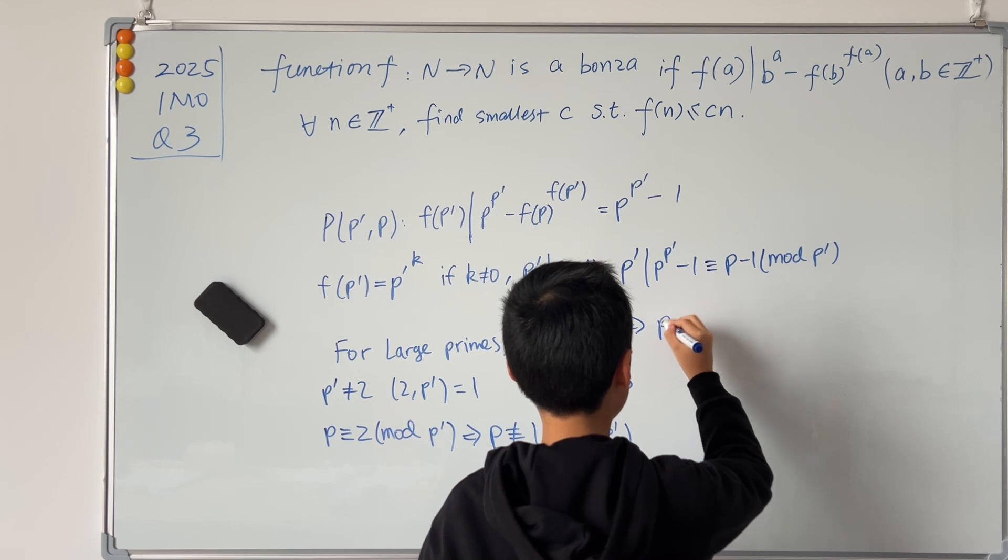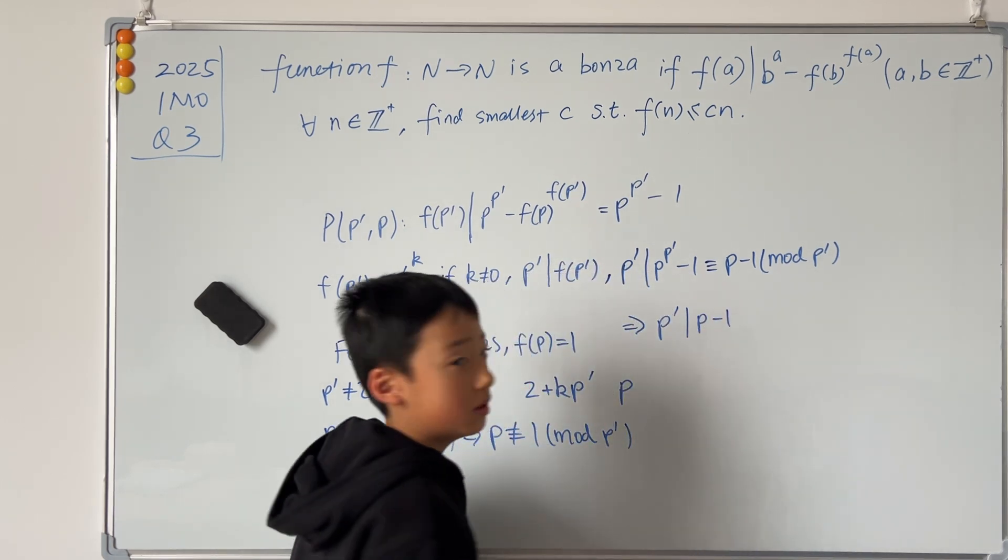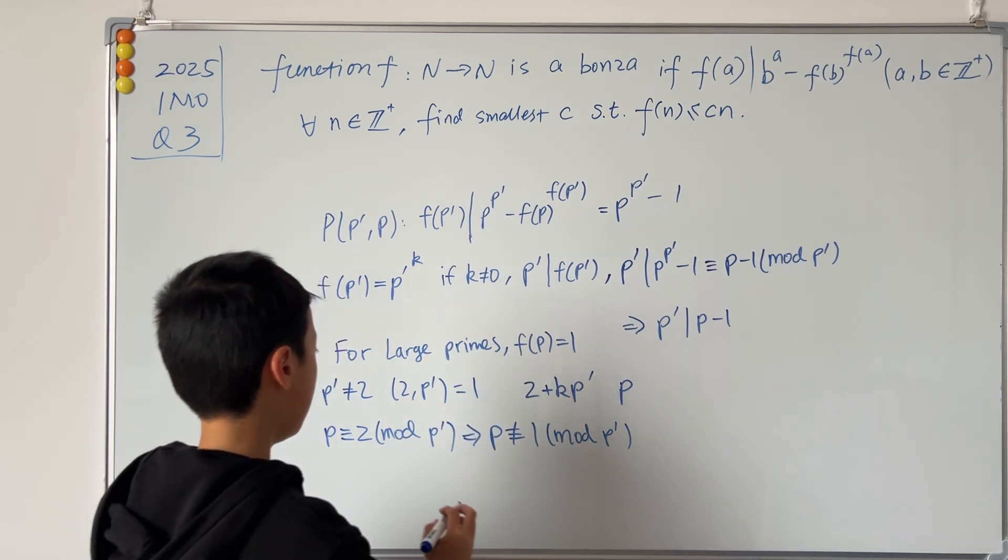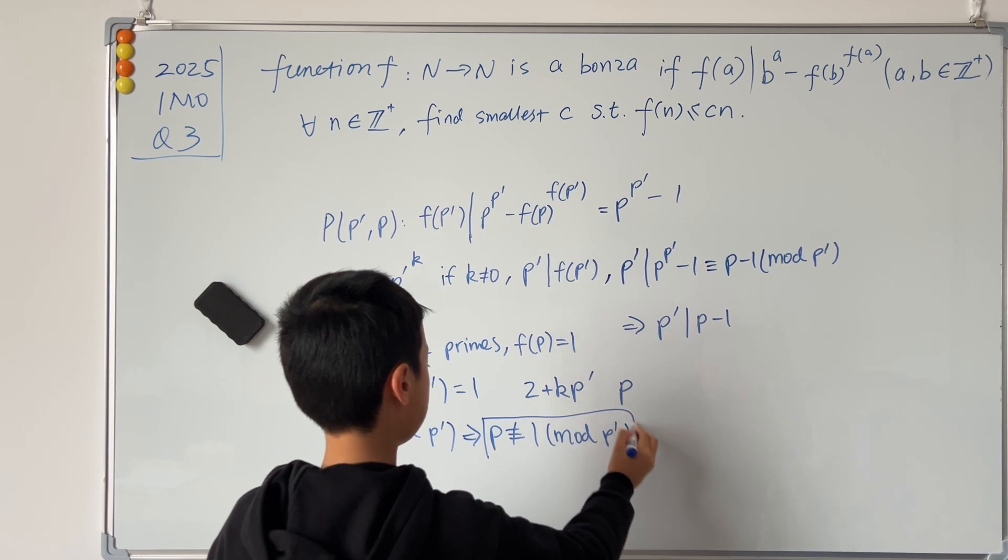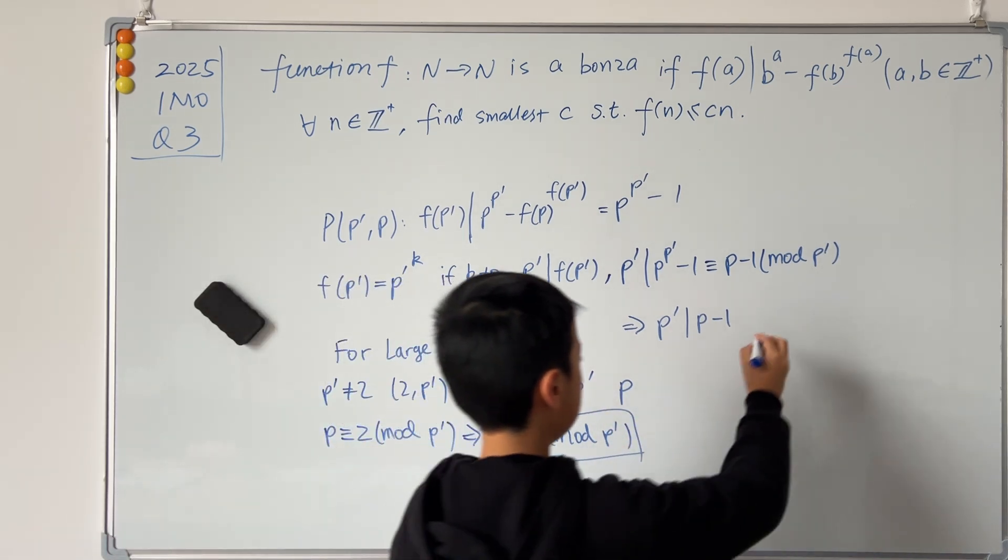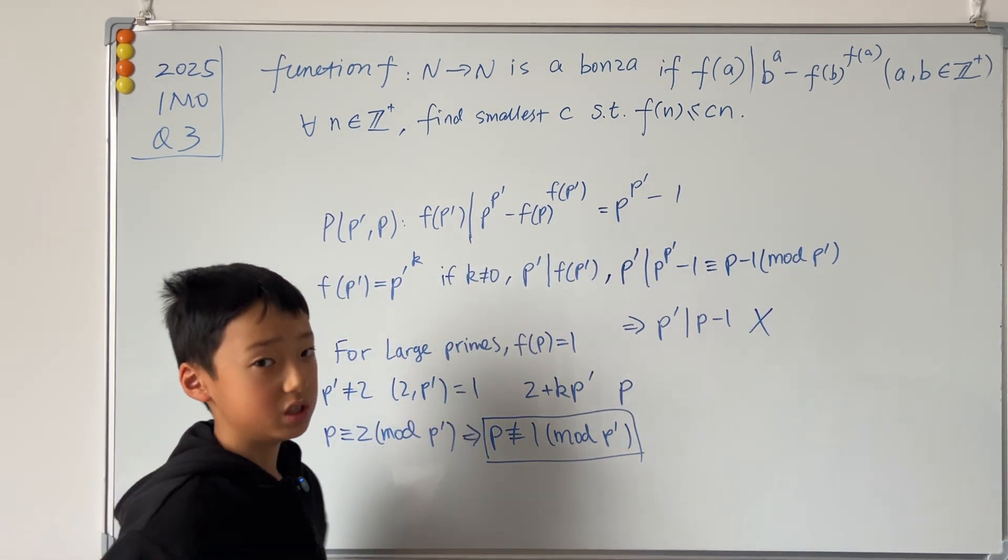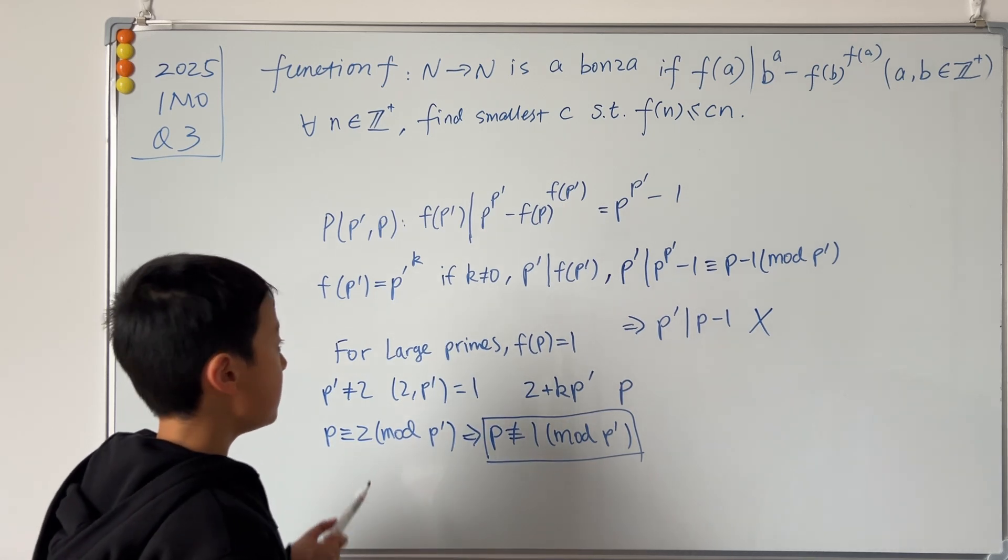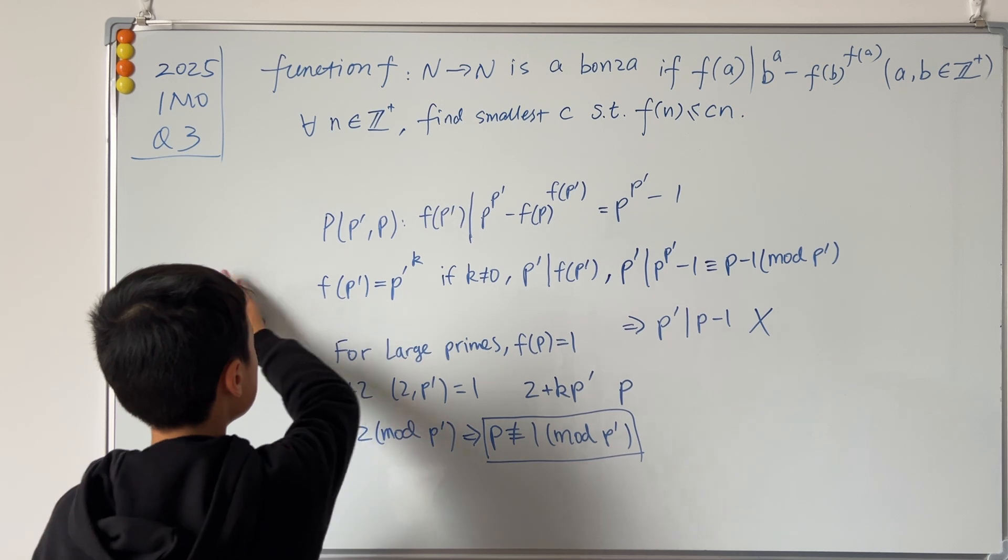So we know that p' must divide p - 1. But this is impossible because we know that p ≢ 1 (mod p'). So this is wrong, which means that k must equal 0, which means that for any odd prime, f(p) must be equal to 1.